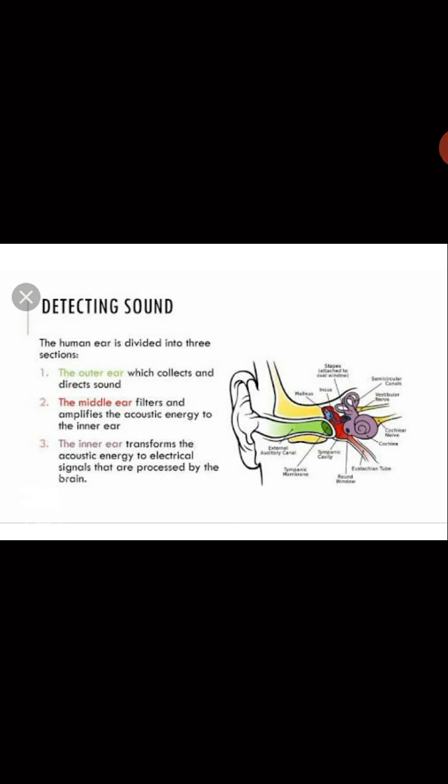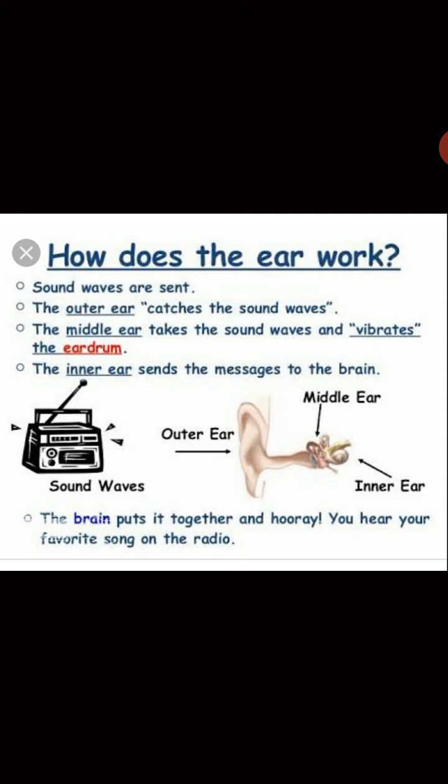Let us see how sound is detected by the human ear. The human ear is divided into three sections: the outer ear, the middle ear, and the inner ear. The outer ear consists of the pinna, and its main function is to collect sound. The middle ear vibrates, filters, and passes sound to the inner ear, while the inner ear transforms this energy into electrical signals that are sent to the brain.